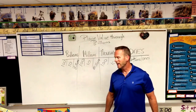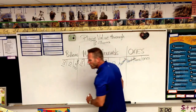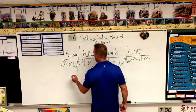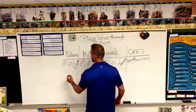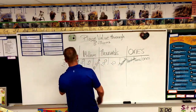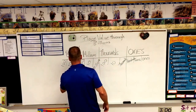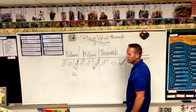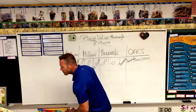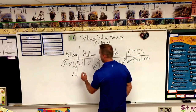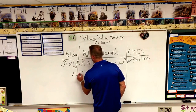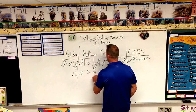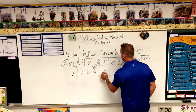So now we take a number. For example, let's go with the one in the book. We have four billion, five hundred thirty-nine million.